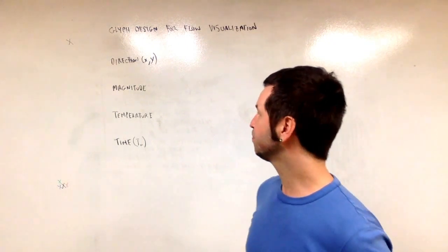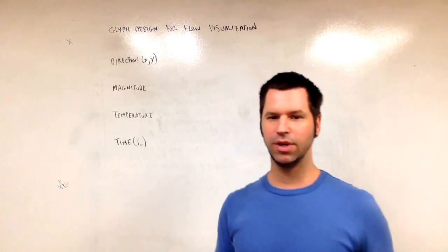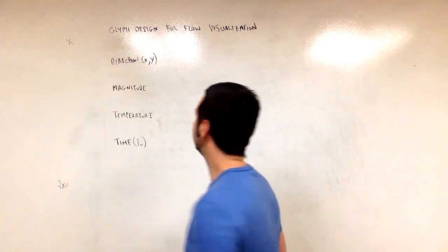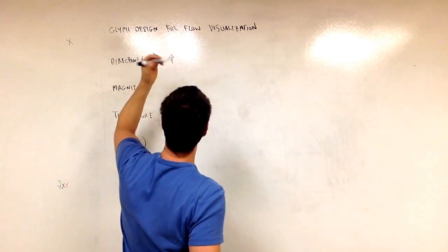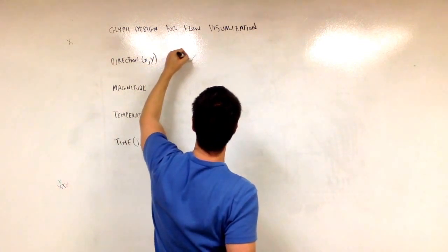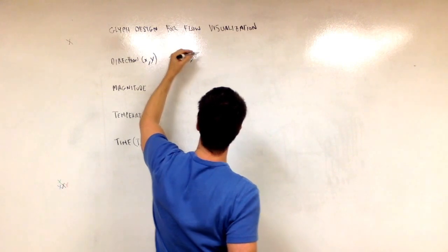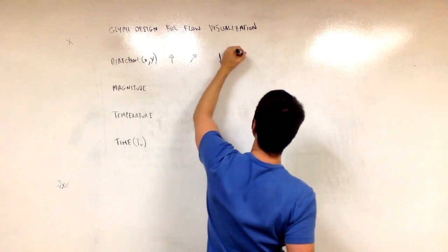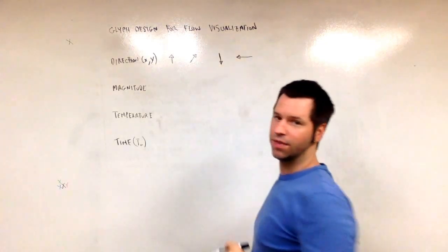But this is the basic idea. So direction. Direction can be encoded using an arrow, right? That's the most naive way to encode direction. That's an arrow pointing up. The arrow can point in any direction. So direction. I need some more practice to draw arrows. It's clear. My arrows are not that great.